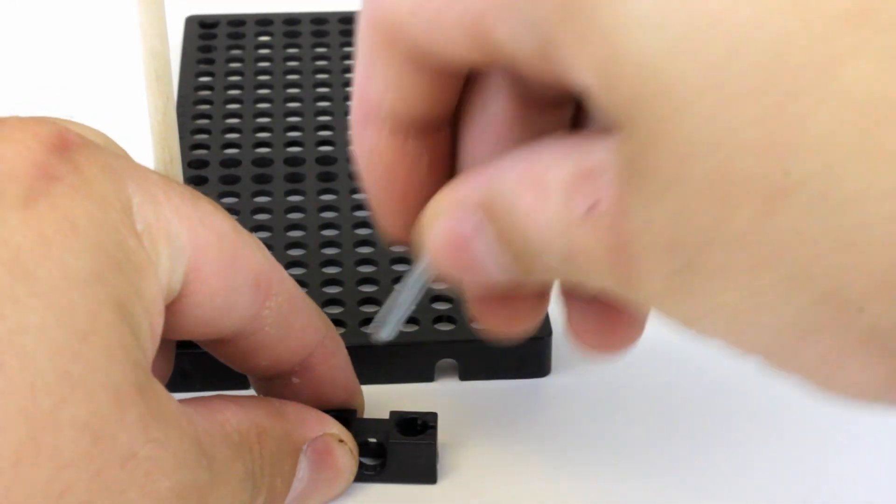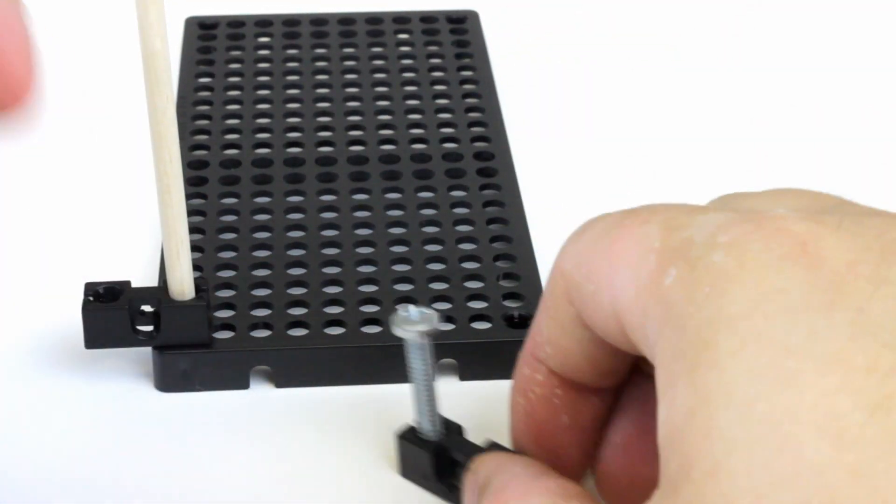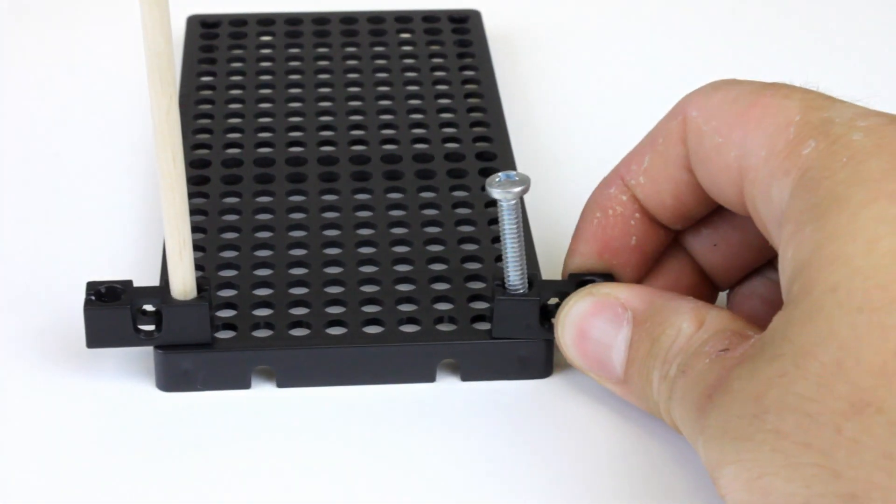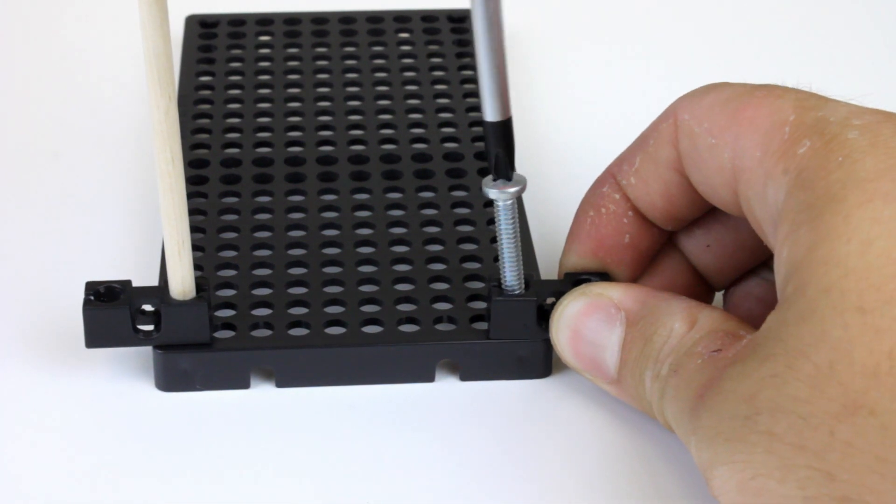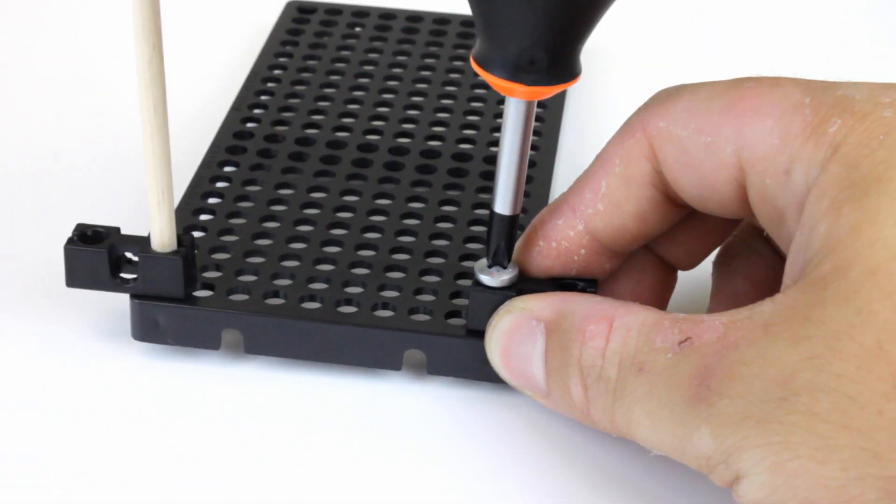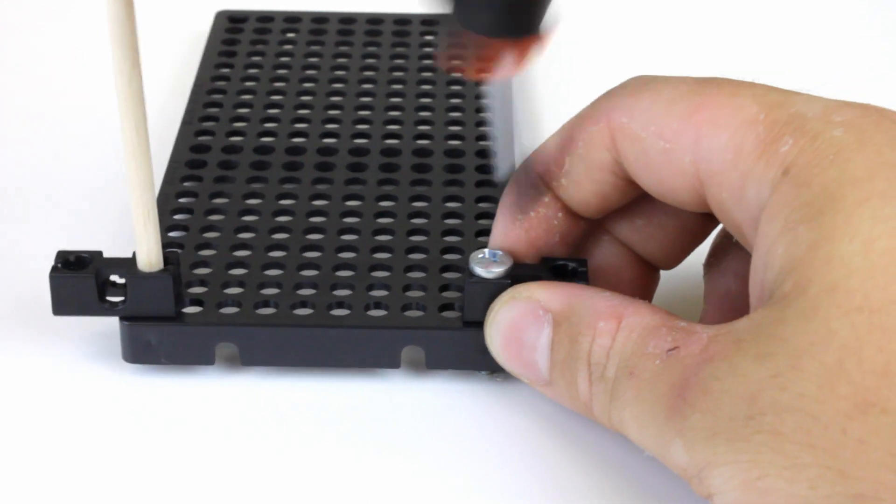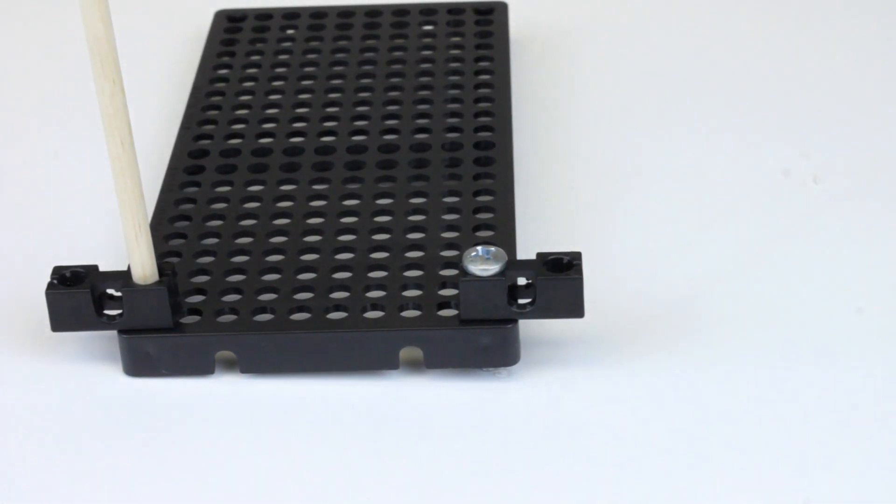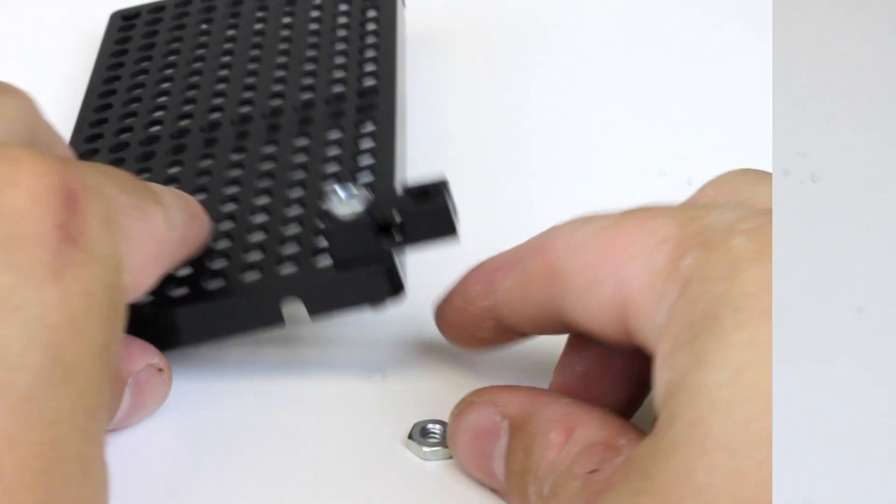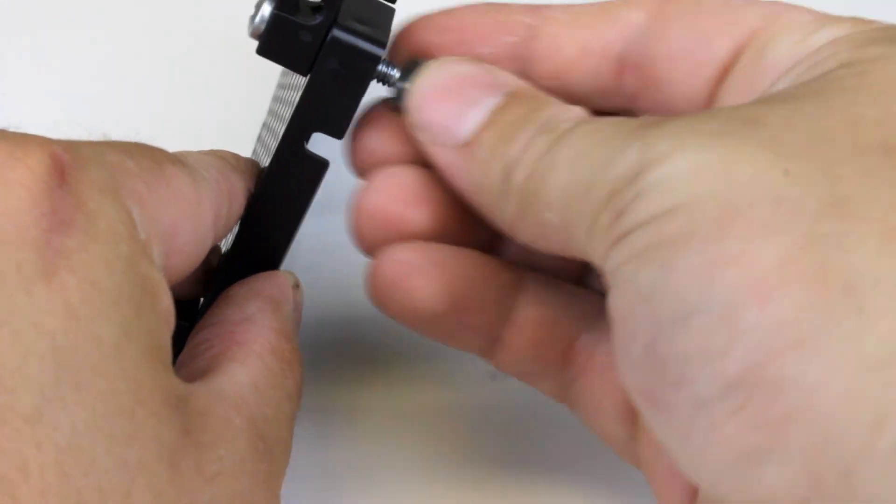Next, take your 1 inch screw and place it in the perpendicular block. Give it a little twist to get it started, then screw it into the opposite hole from where you placed your dowel. Make sure the screw is tightened all the way down, then add a number 10 nut on the bottom.